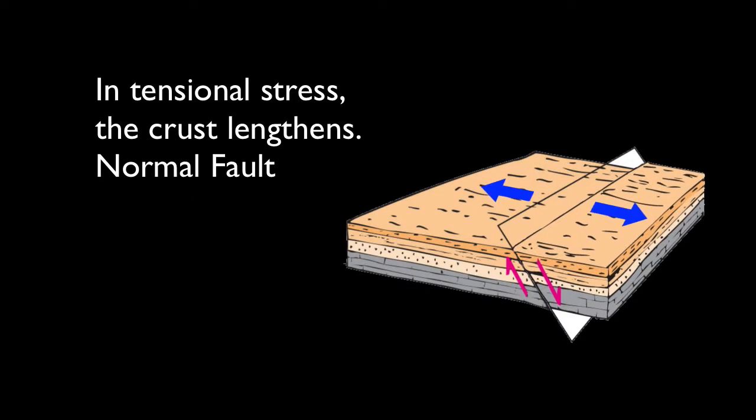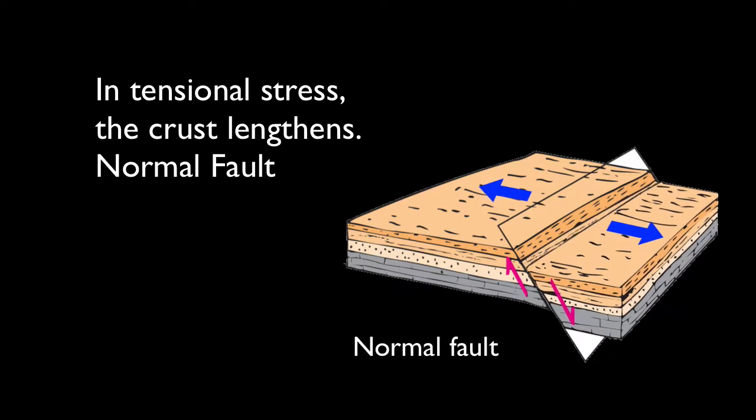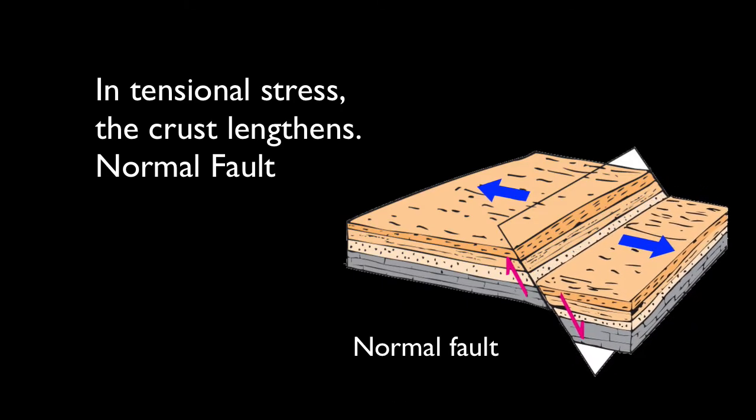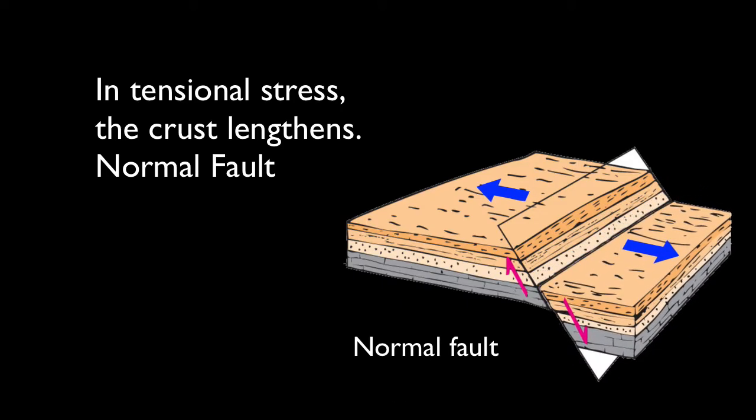If the hanging wall moves down, the fault is called a normal fault. Normal faults form in a geologic setting where tension dominates, where the crust is being stretched and lengthened.